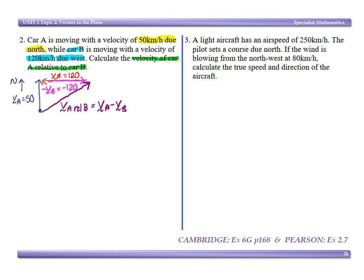Now that makes sense if you think of the formula. Remembering that the formula is the velocity of A equals the velocity of A relative to B plus the velocity of B. So to get the velocity of A relative to B on its own, we need to take away the velocity of B from both sides. So that gives us that the velocity of A relative to B is equal to V of A minus V of B.